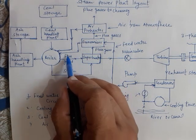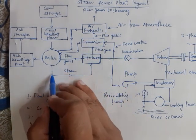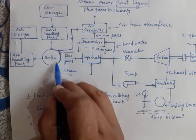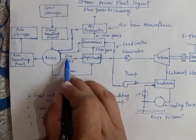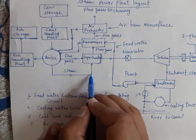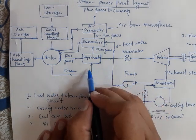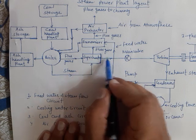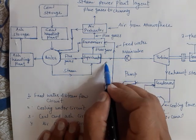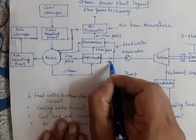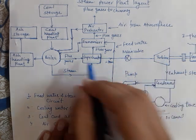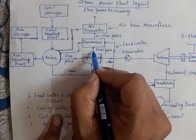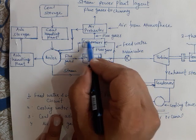In the superheater, the flue gases are utilized to superheat the steam produced by the boiler. The superheated steam is formed inside the superheater and moves toward the turbine, while the flue gases continue on through the economizer.